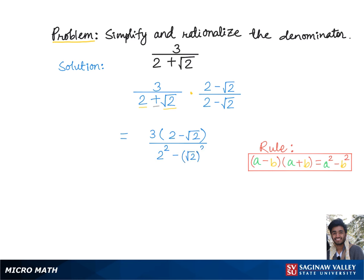Which gives us 3 times 2 is 6, minus 3 times √2 is 3√2, over 2² is 4, minus (√2)² is simply 2, which is equal to 6 - 3√2 over 4 - 2 is 2.